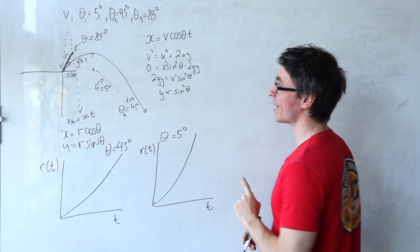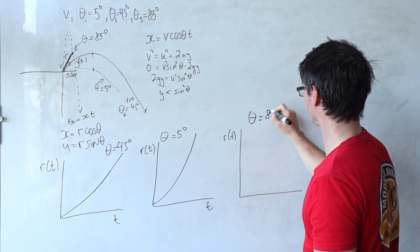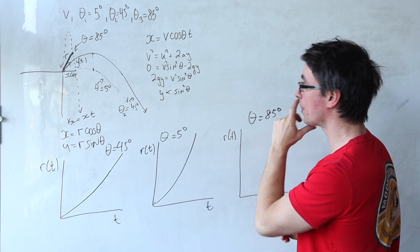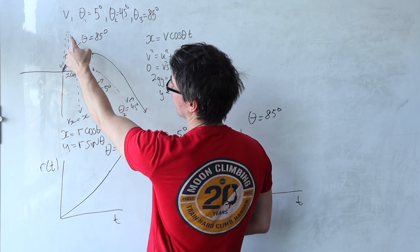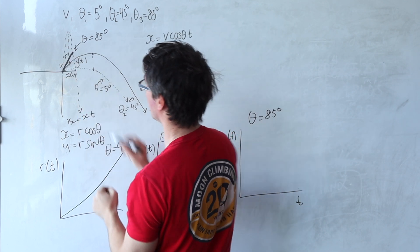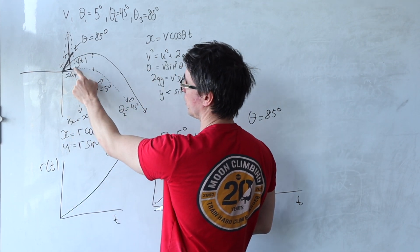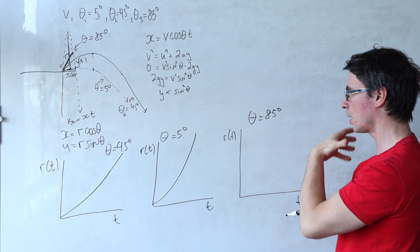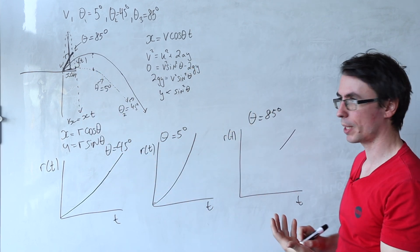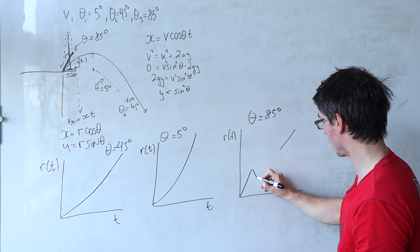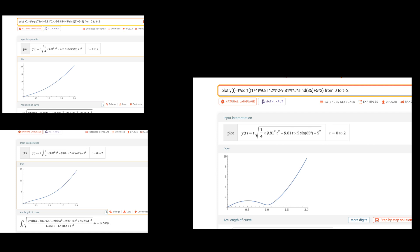The interesting case is when theta equals 85 degrees. There's going to be a point where r(t) initially increases, but then it will start decreasing because the vertical height is definitely bigger than the horizontal distance. Overall r(t) should decrease after some time, then start increasing again - so it will initially rise to some value, then dip, and then carry on increasing.